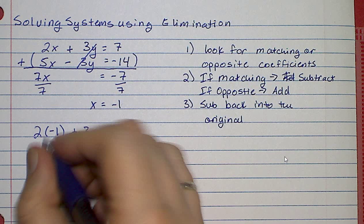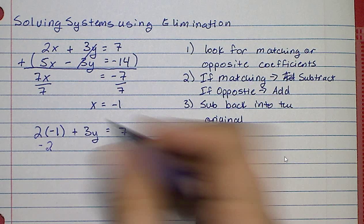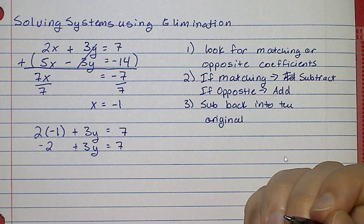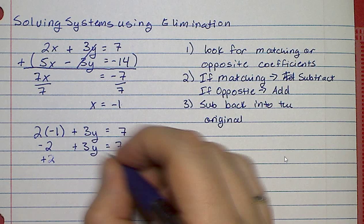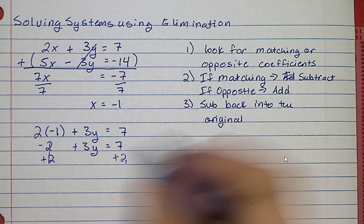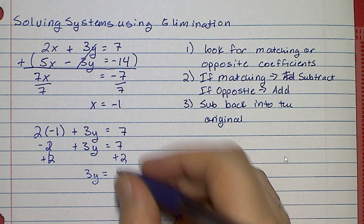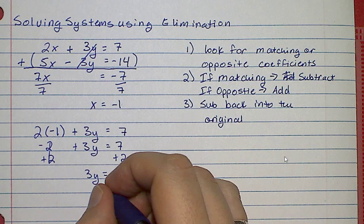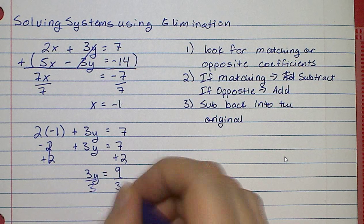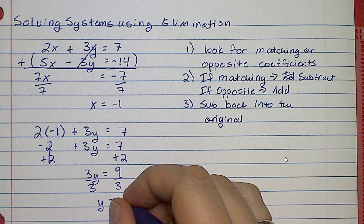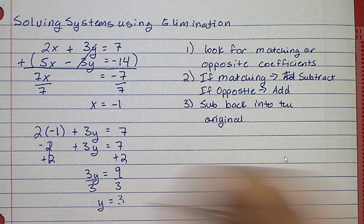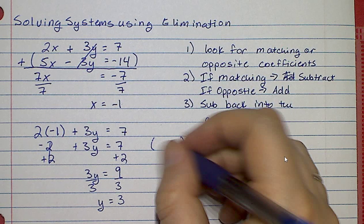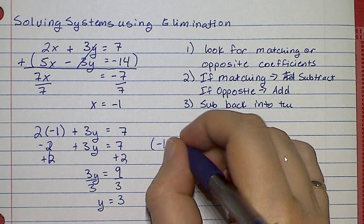So 2 times negative 1 is negative 2 plus 3y equal to 7. Now if I'm solving for y, the next step is to add 2 to both sides — these are going to cancel — and I have 3y is equal to 9. Divide 9 by 3, and y is equal to 3. And then I'm going to list my answer as a coordinate because these are two lines that are intersecting. So the coordinate is negative 1, 3.